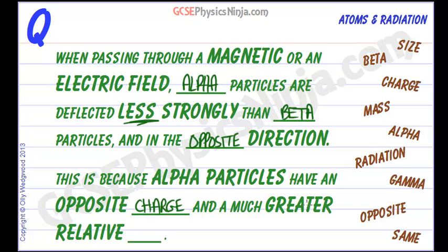Alpha particles also have a much greater relative mass. An alpha particle is 2000 times more massive than a beta particle — an electron. So it's much harder to make an alpha particle deflect off its course, and that's why alpha particles don't deflect as strongly as beta particles.